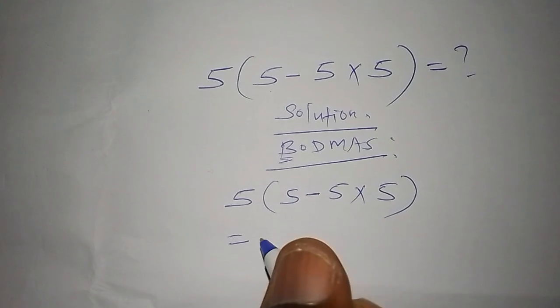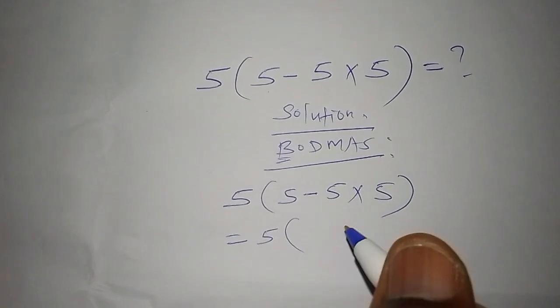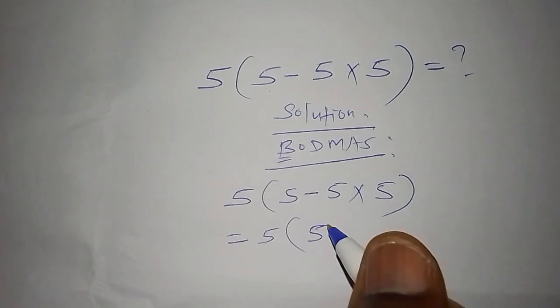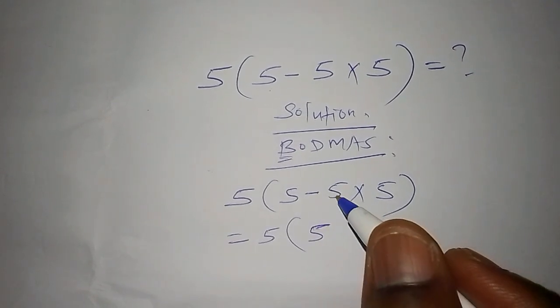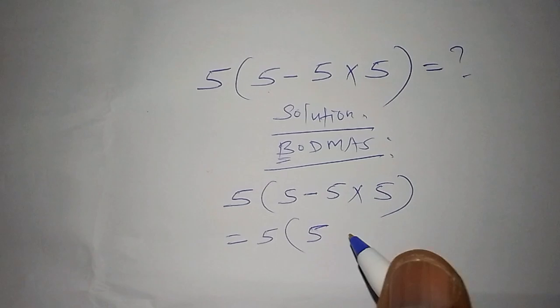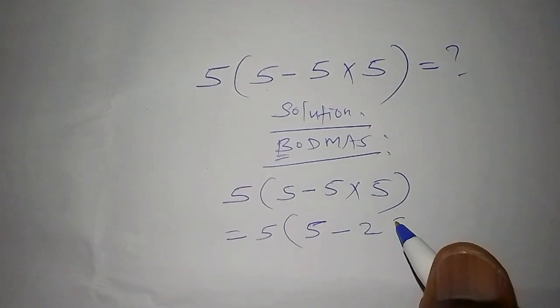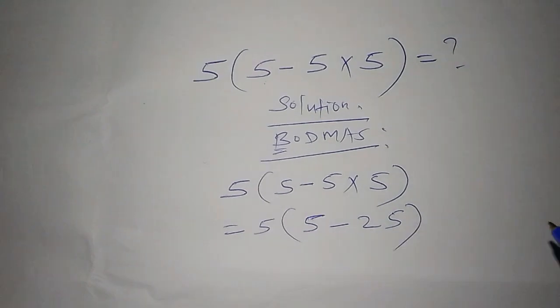We shall say that we have 5 into bracket. We shall have this 5 here. Then we are going to take 5 times 5, which equals 25. Then we shall get the answer as minus 25. Then we close the bracket.